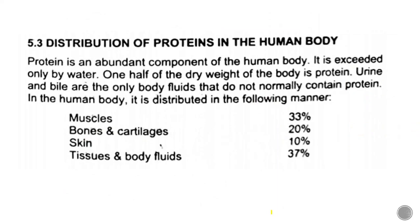Next is the distribution of proteins in the human body. Proteins are found in abundant form because every component of a living organism contains proteins. After water, the next most abundant component in the human body is protein. One half of the dry weight of the human body is protein.